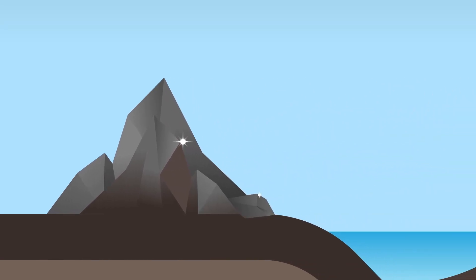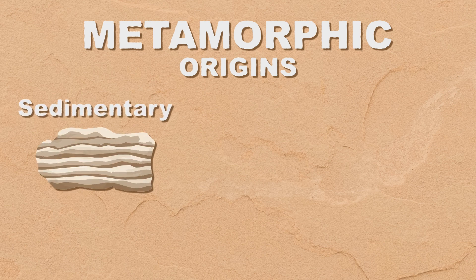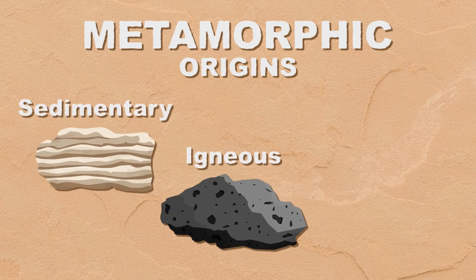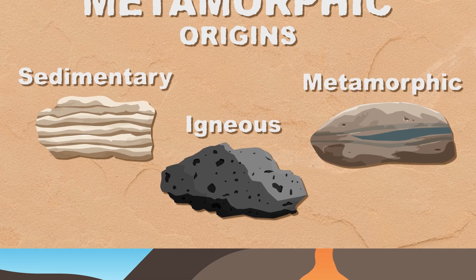Rocks! Rock! But let's be more specific. Let's learn about the rock type of metamorphic. Metamorphic rocks can originate from any type of rocks, including sedimentary, igneous, or other metamorphic rocks.